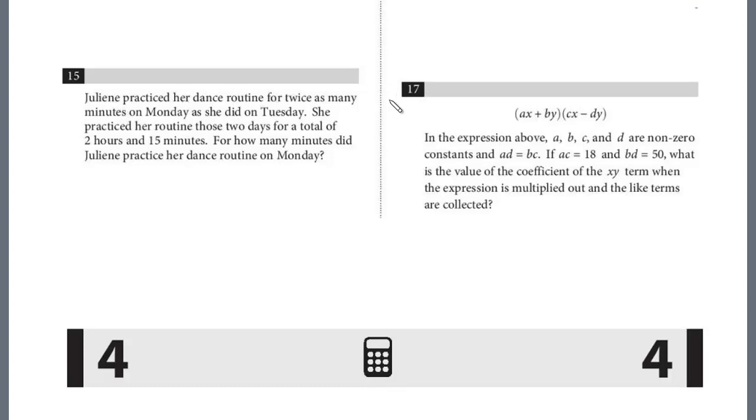Julianne practiced her dance routine for twice as many minutes on Monday as she did on Tuesday. She practiced her routine those two days for a total of two hours and 15 minutes. How many minutes did Julianne practice her dance routine on Monday? So it's a common question, system of equations. She practiced twice as many minutes on Monday as she did on Tuesday. So I'm going to use M and T. Remember, Monday is twice as many minutes as Tuesday.